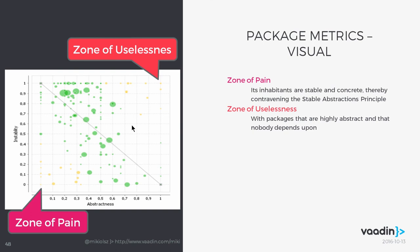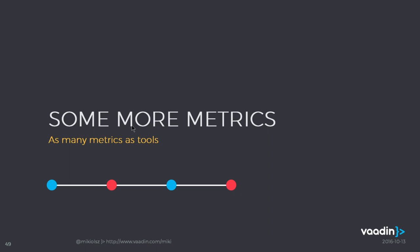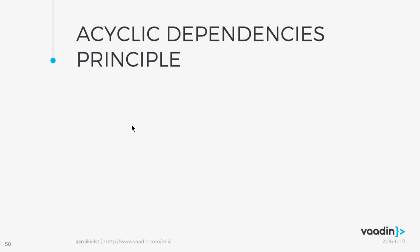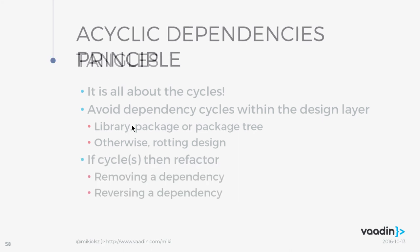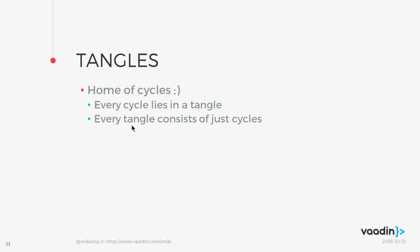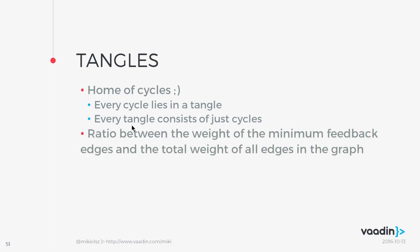There are also metrics based on cycles and graphs. Dependency cycles are things you want to avoid in your design layers — they can exist in libraries, packages, or package trees. If you don't address them early, you get what's called rotting design, where maintainability suffers greatly. If you have cycles, refactor to remove or reverse the dependency. Tangles are collections of cycles — every cycle lies in a tangle, and every tangle consists of cycles. Take care of them.